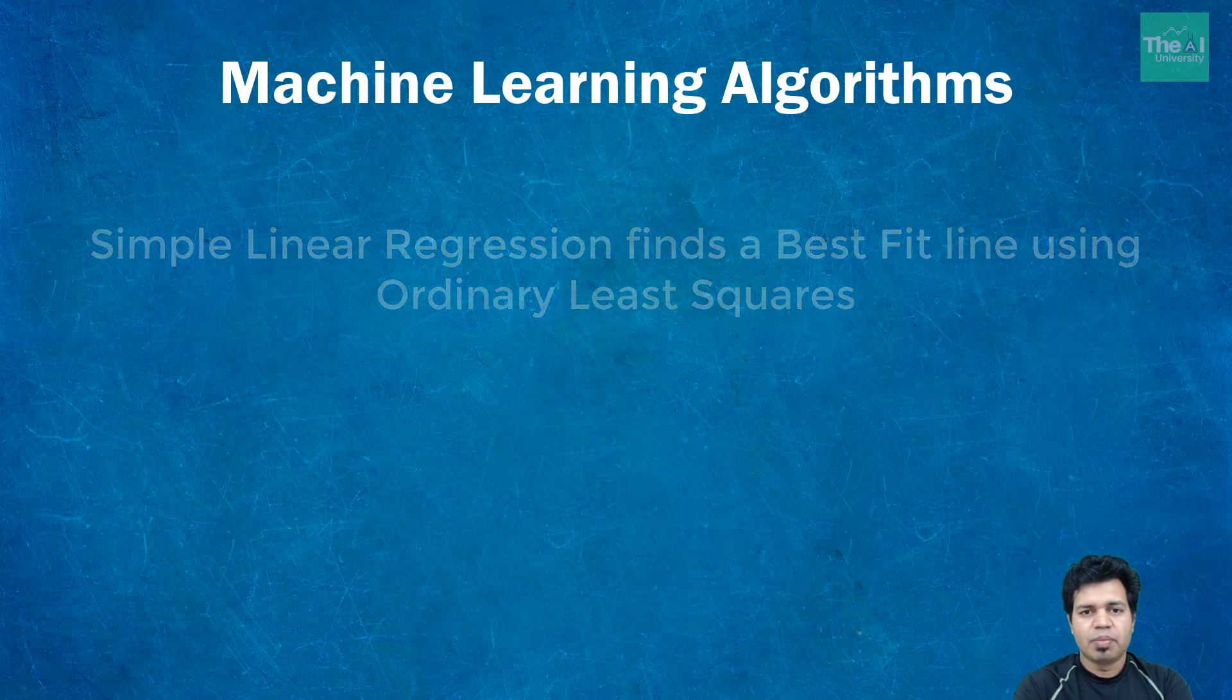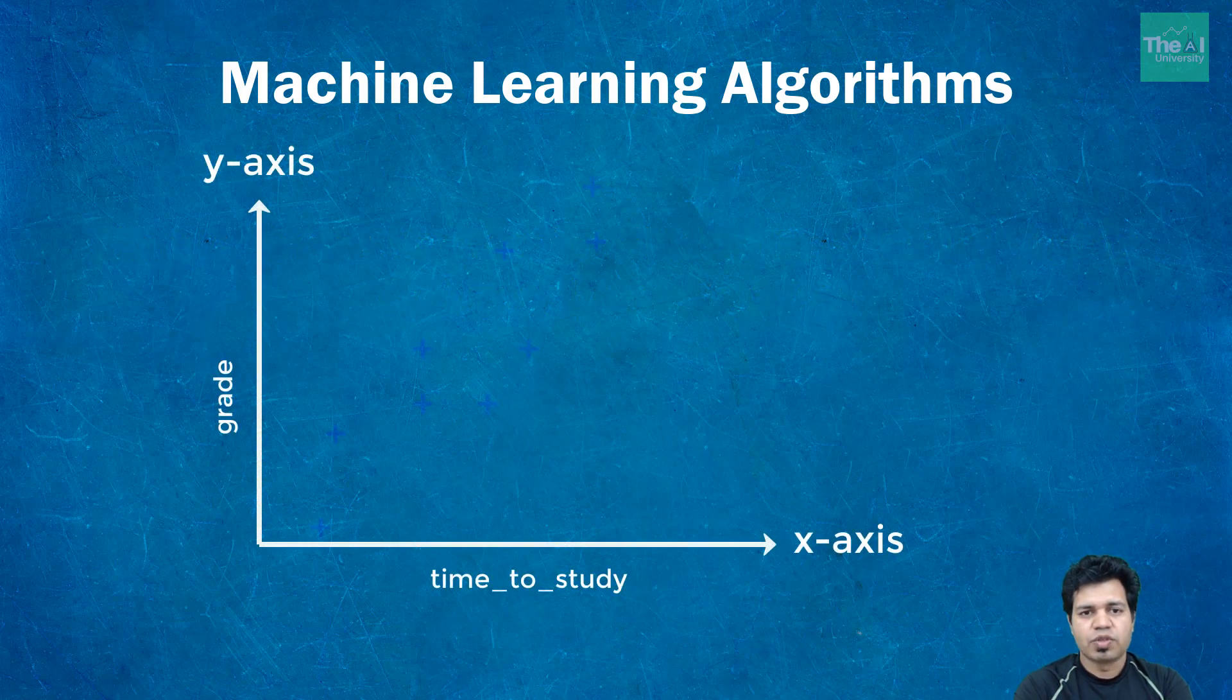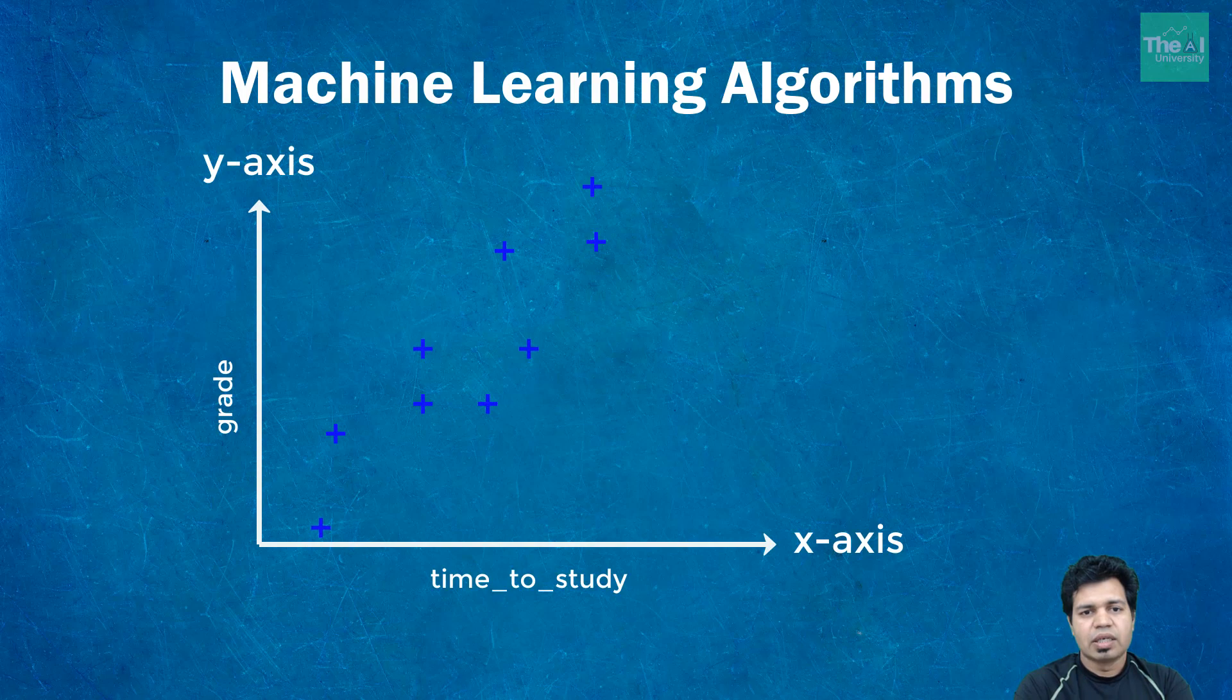So the blue plus sign shown here are actual observations and the trend line shown here is best fit line which also depicts our simple linear regression model. Let's drop some vertical lines from the individual data points to the best fit line.